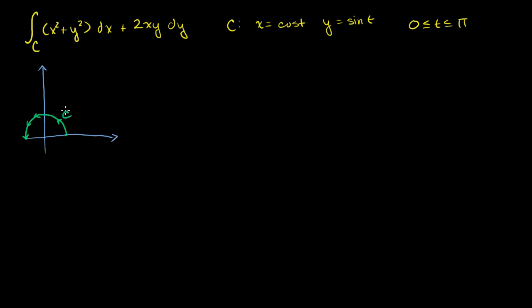So we can't just show that f in this example is a conservative vector field and, since it's a closed loop, it equals 0. This isn't a closed loop, so we can't apply that. But let's see if we can apply some of our other tools.